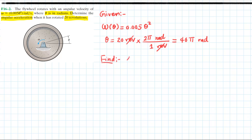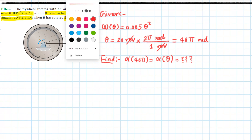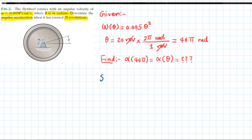We are asked to find the angular acceleration when it rotates 40 pi radians. In other words, we want to find the angular acceleration as a function of position.